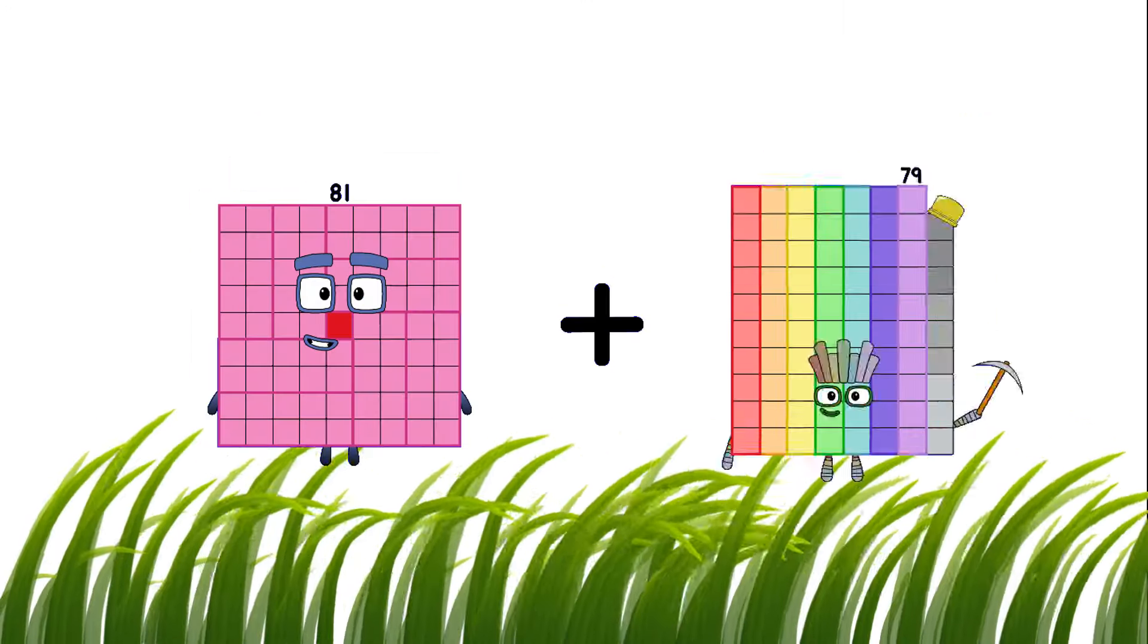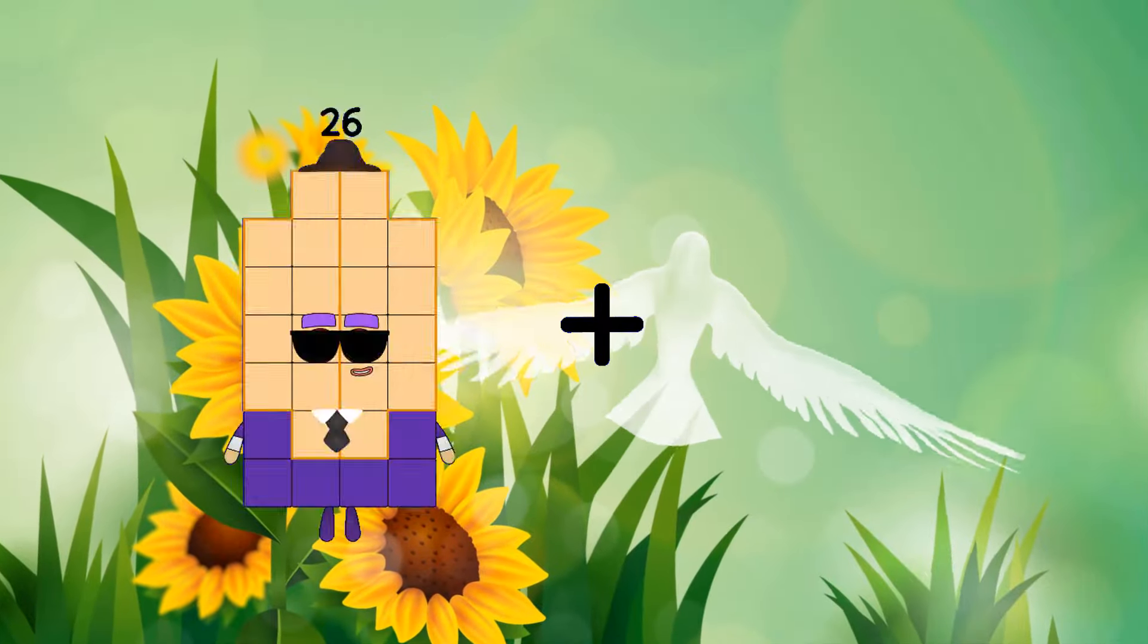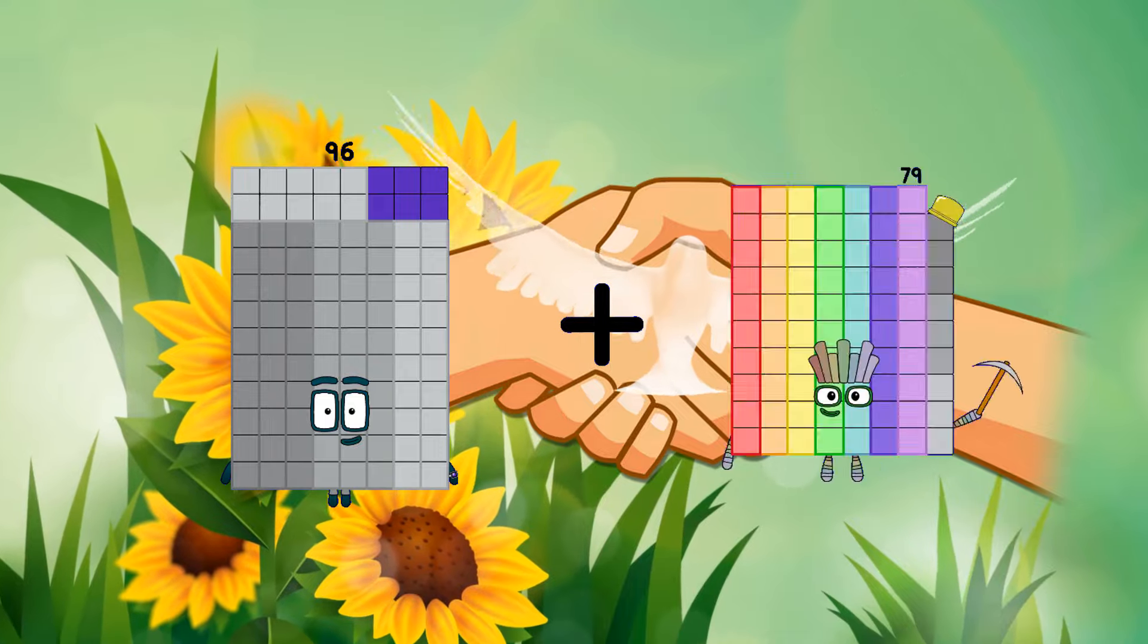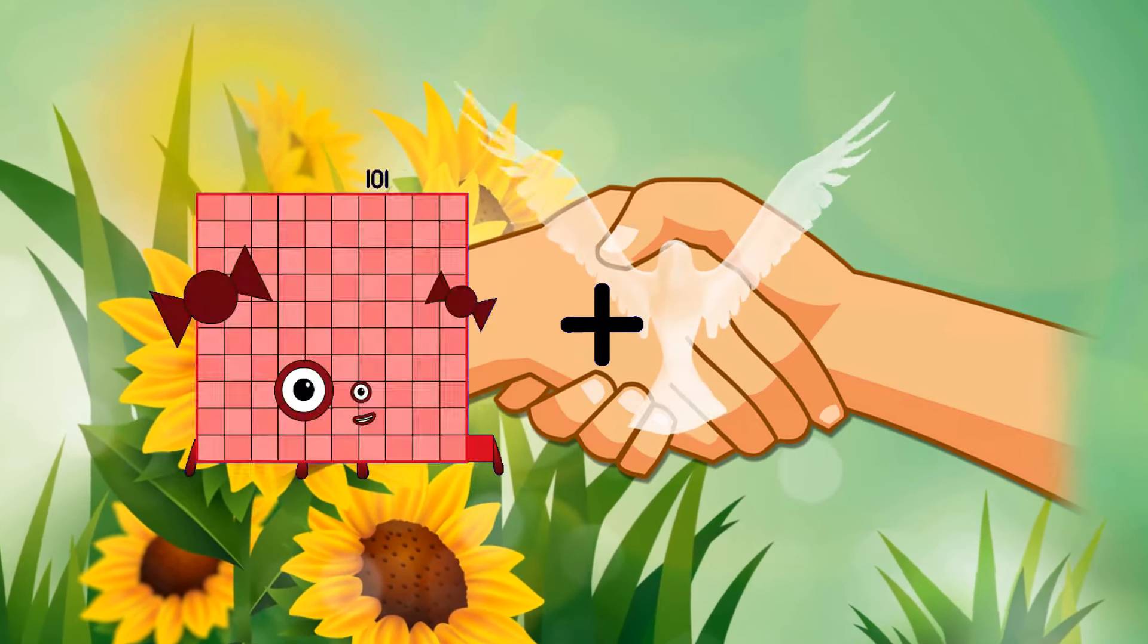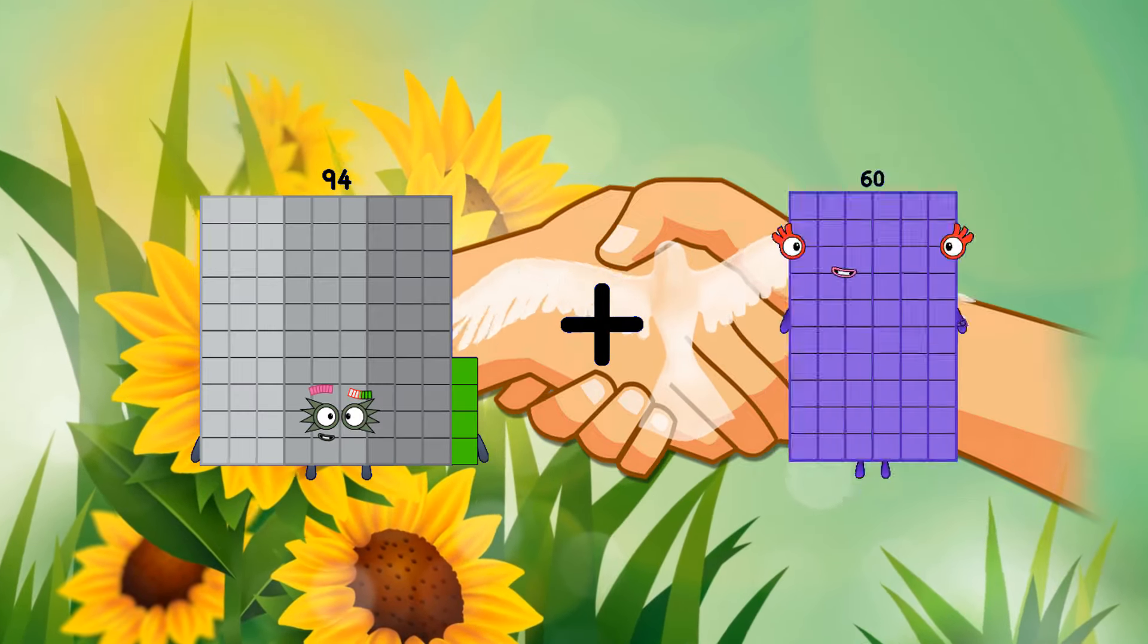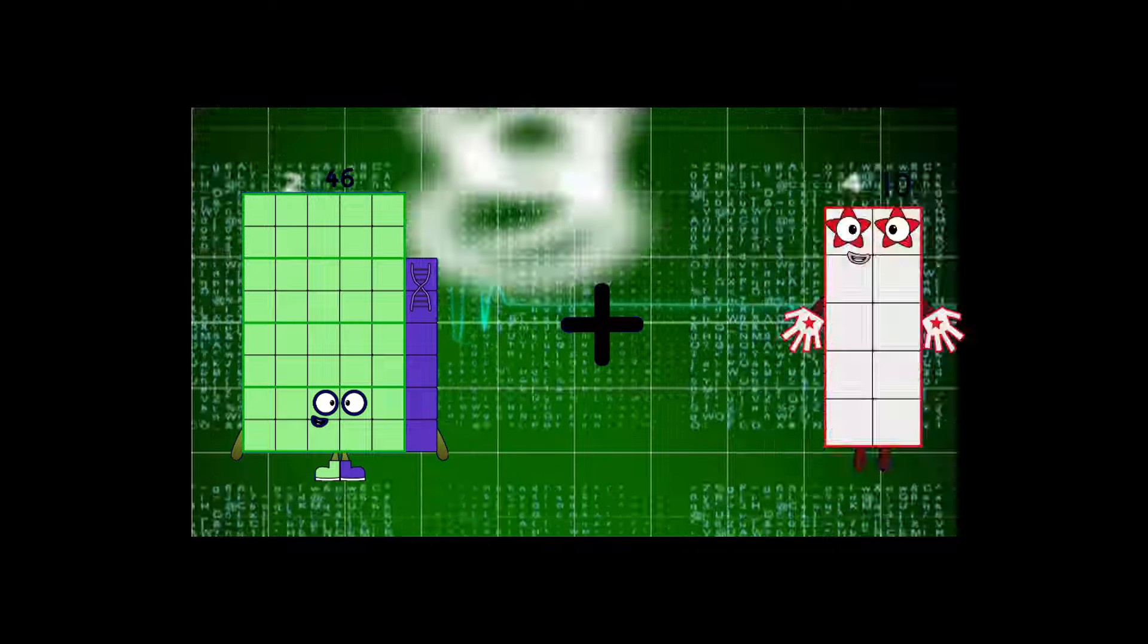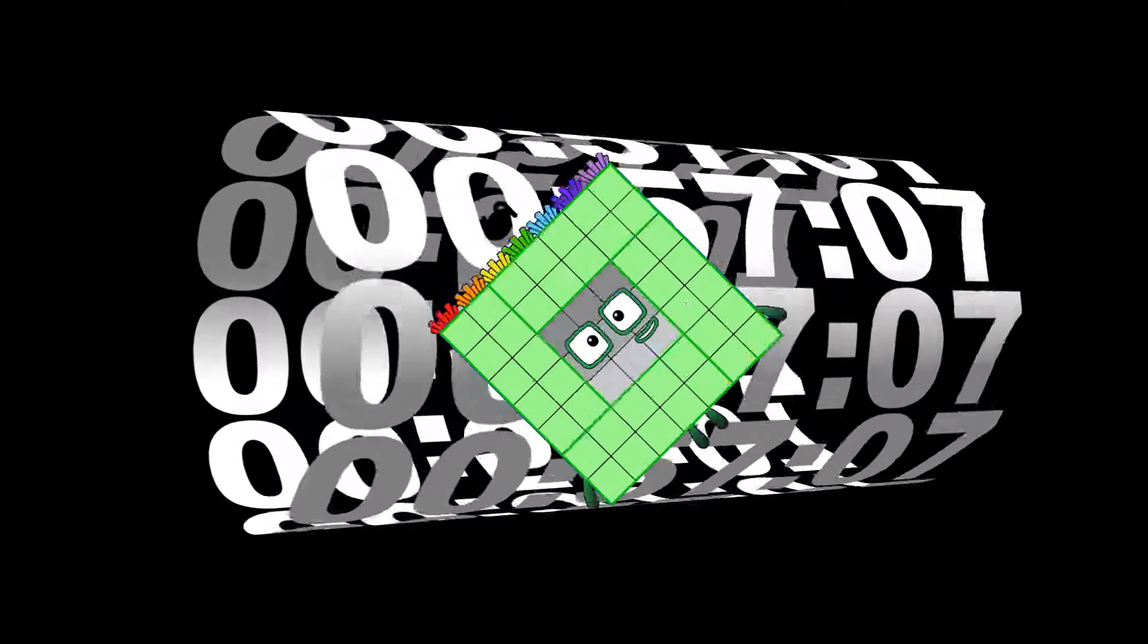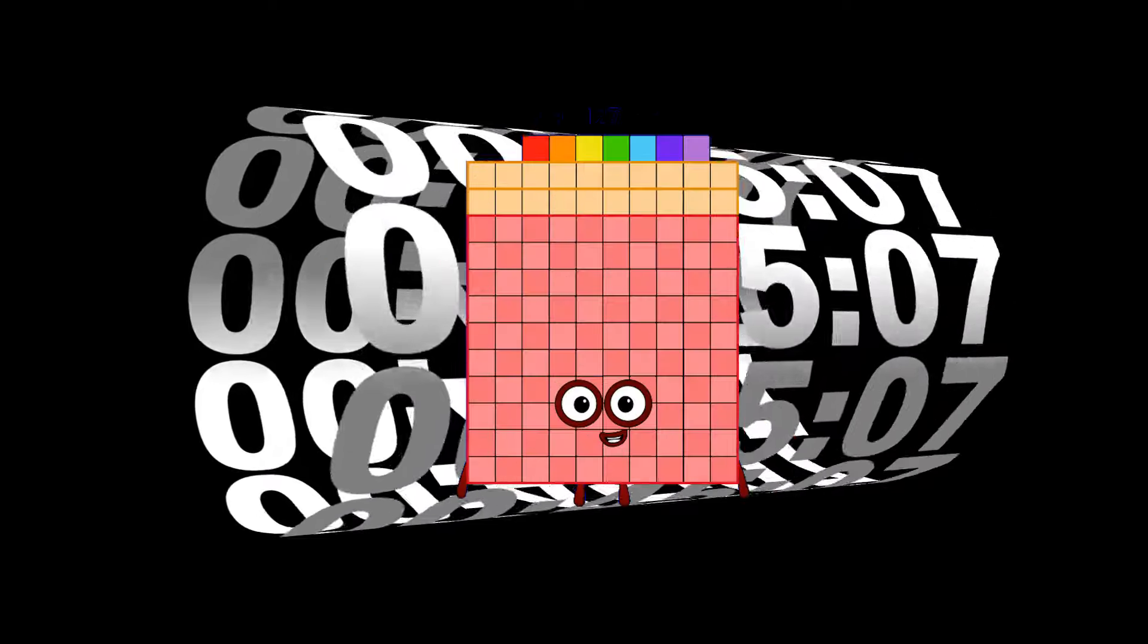81 plus 90 equals 171. 96 plus 52 equals 148. 94 plus 18 equals 112. 46 plus 3 equals 49. 54 plus 73 equals 127.